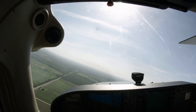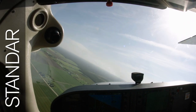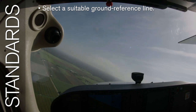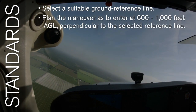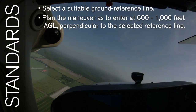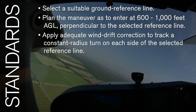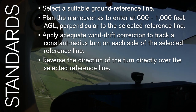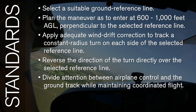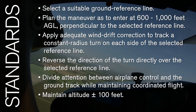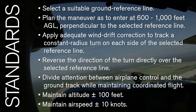Now that we've covered how to fly the maneuver, let's look at the end goals for your skills for S-turns. Some of the standards for the end-of-course checkride include: select a suitable ground reference line; plan the maneuver to enter at 600 to 1,000 feet AGL perpendicular to the selected reference line; apply adequate wind drift correction to track a constant radius turn on each side of the reference line; reverse the direction of the turn directly over the selected reference line; divide attention between airplane control and the ground track while maintaining coordinated flight; maintain altitude plus or minus 100 feet; and maintain airspeed plus or minus 10 knots.